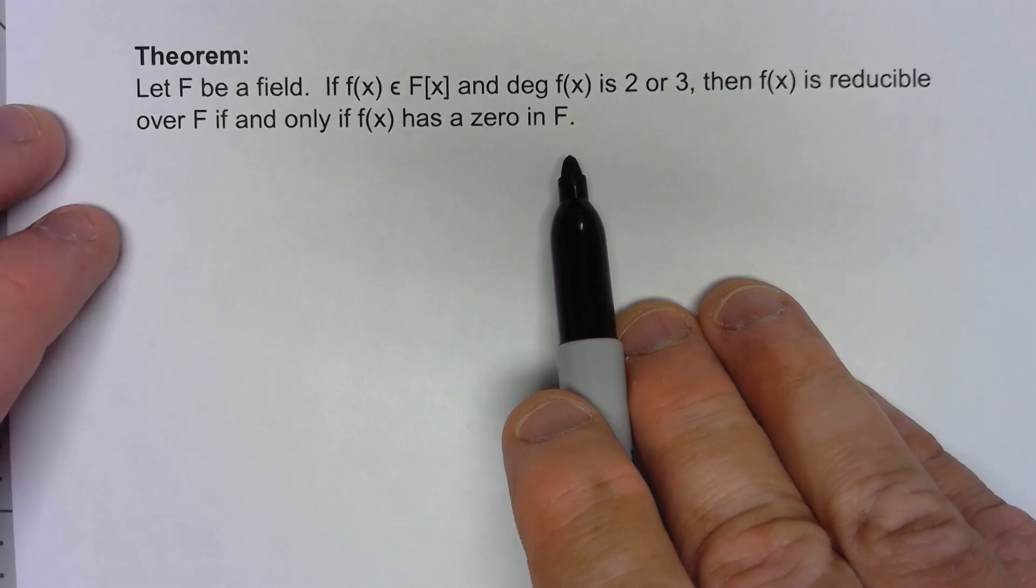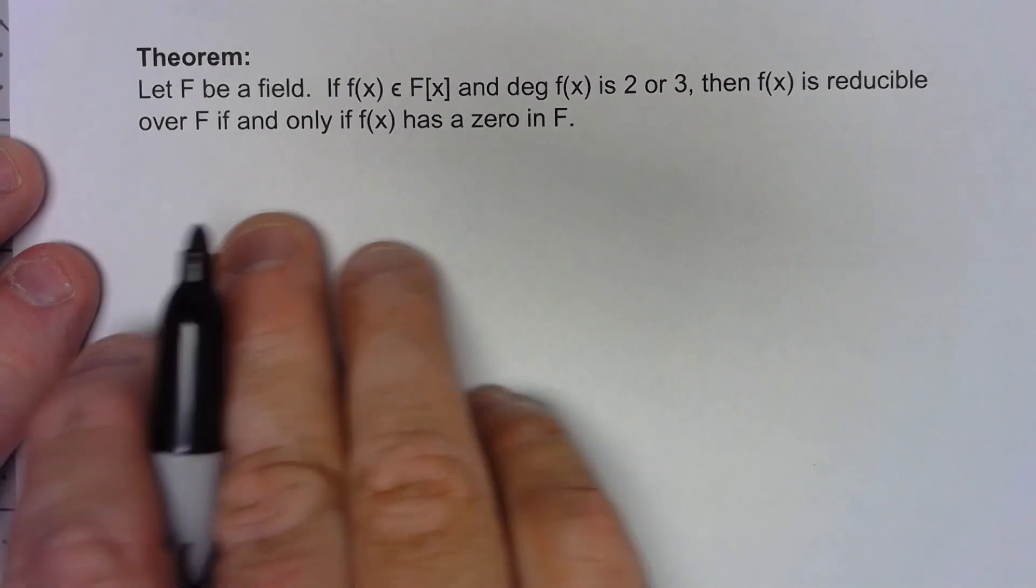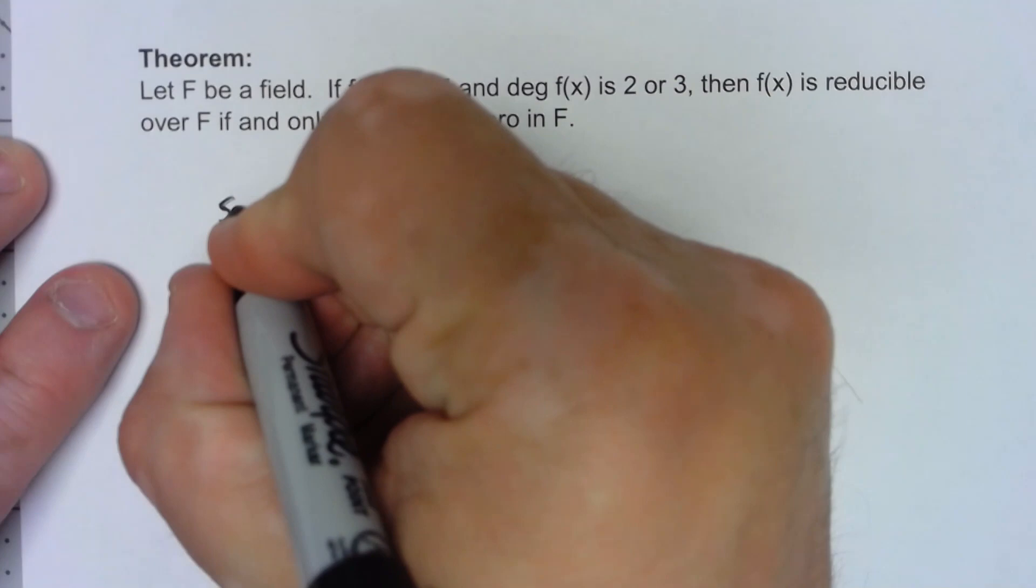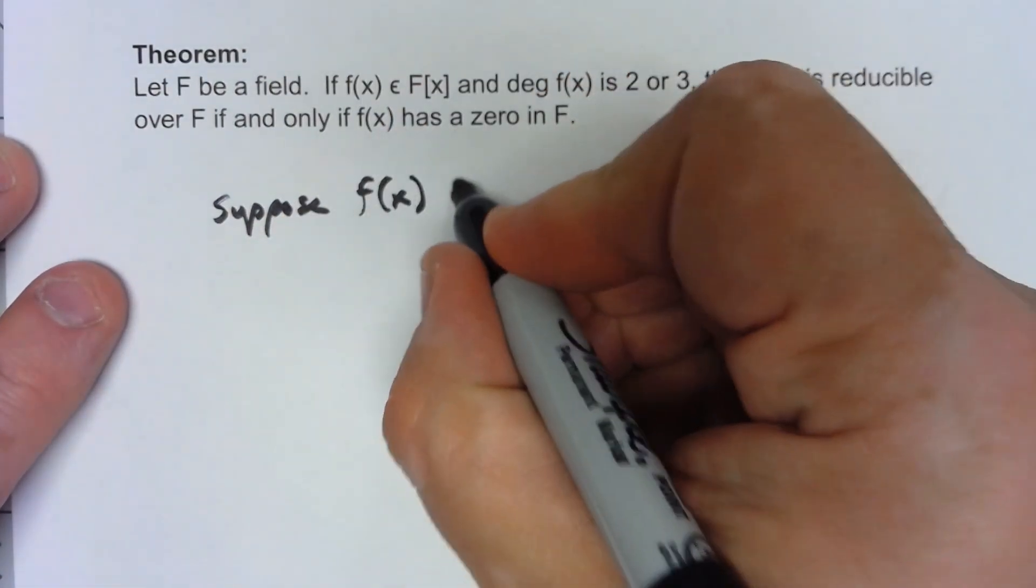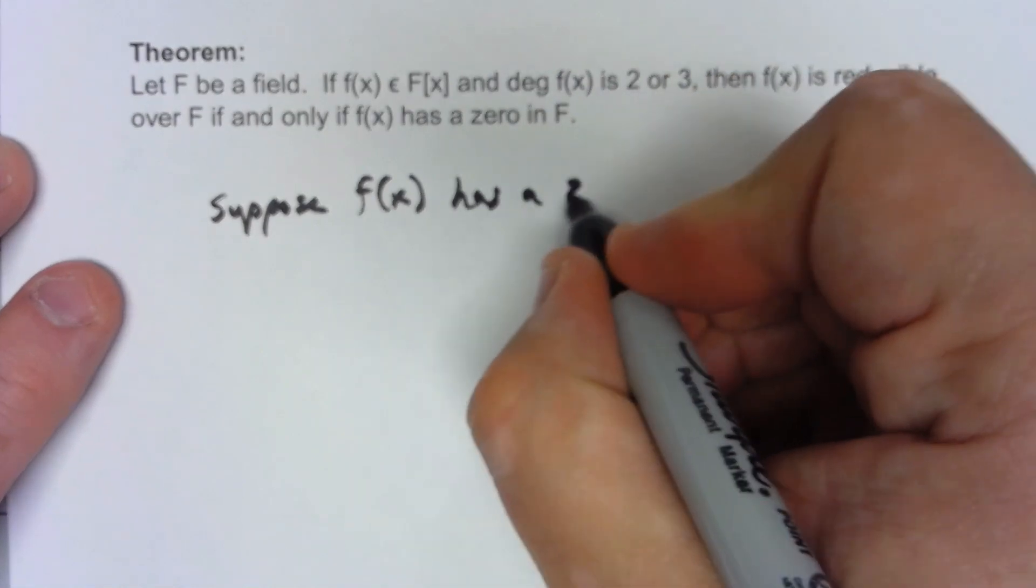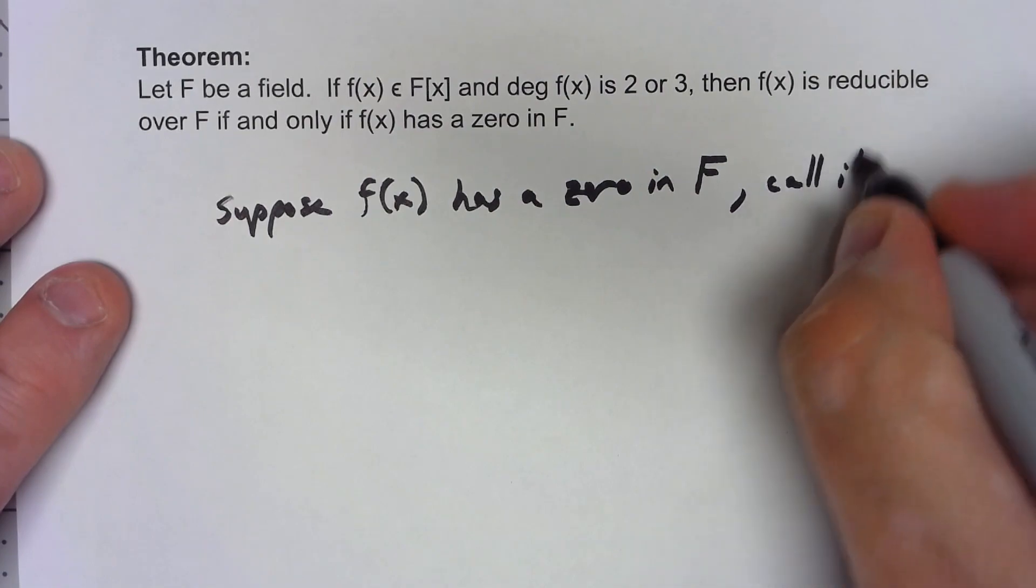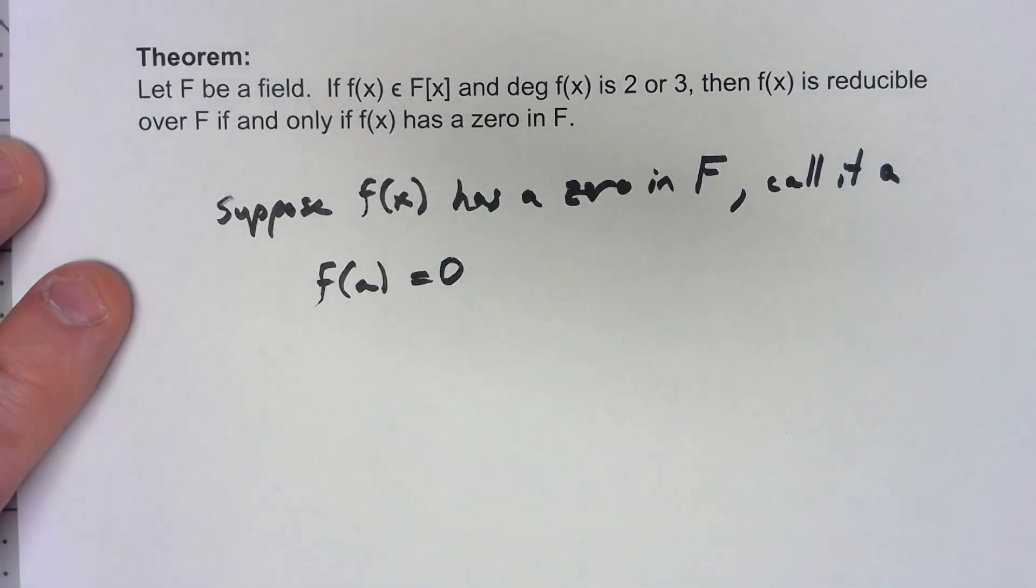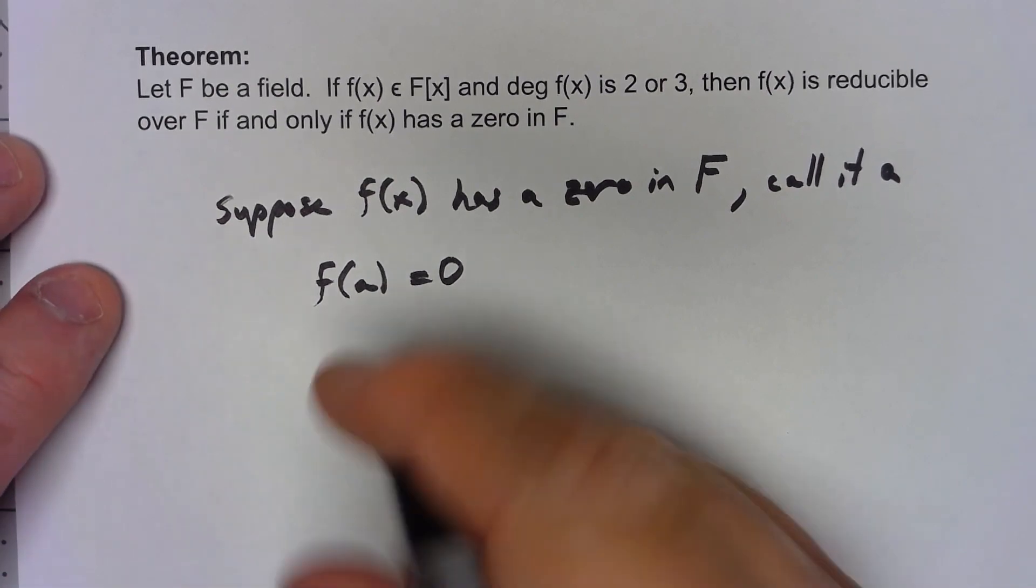Why is that? Well because it's an if and only if statement there's two directions so let's suppose first of all do the easy one. Let's suppose f(x) has a zero in F and call it a. So that means f(a) equals 0.